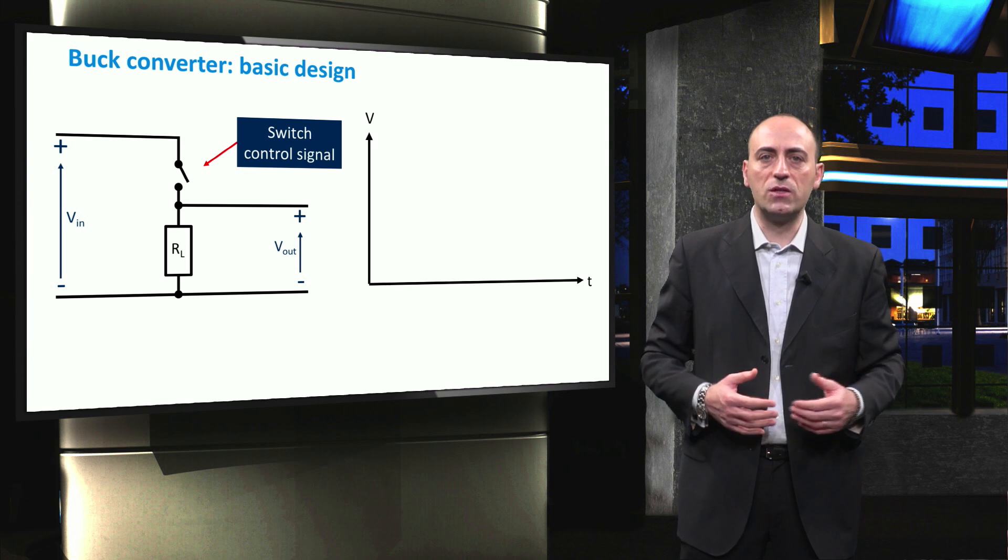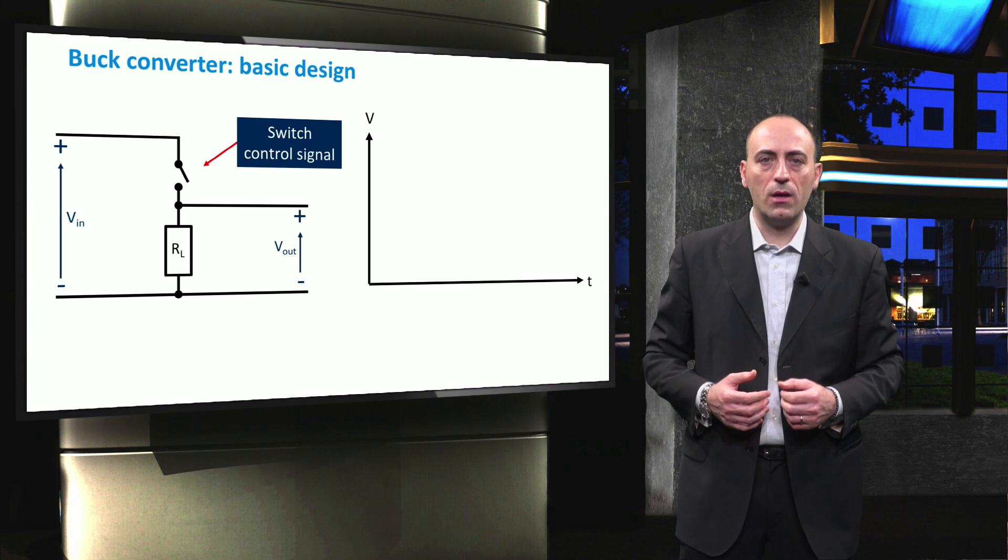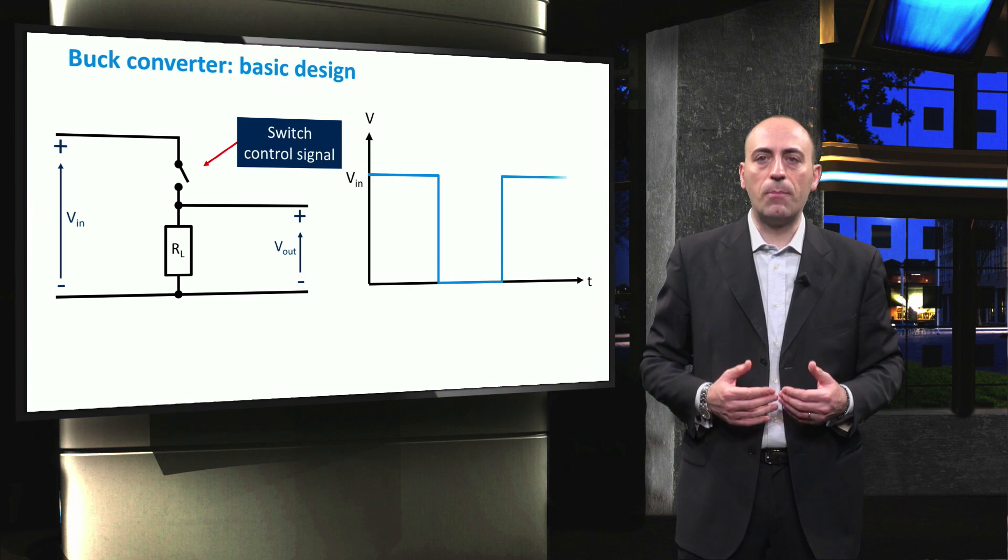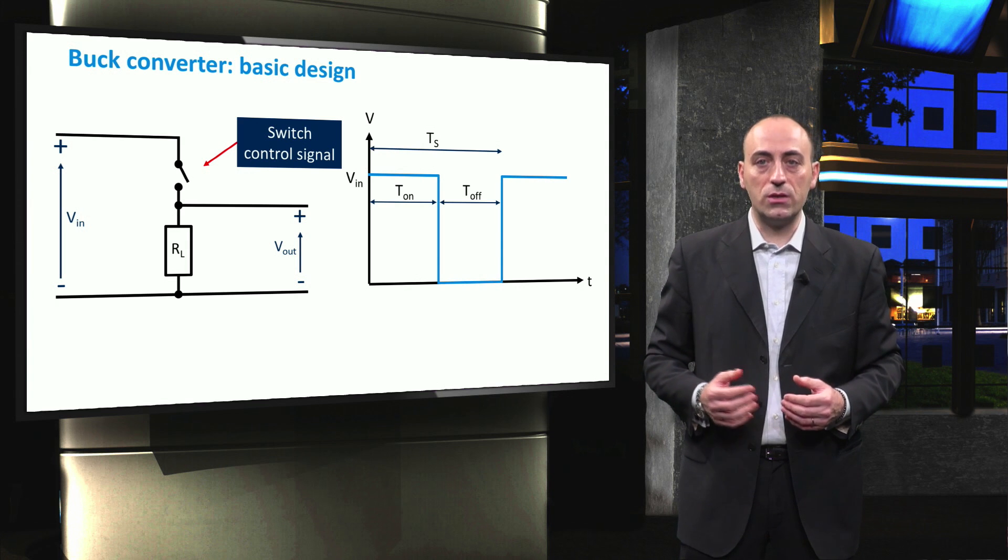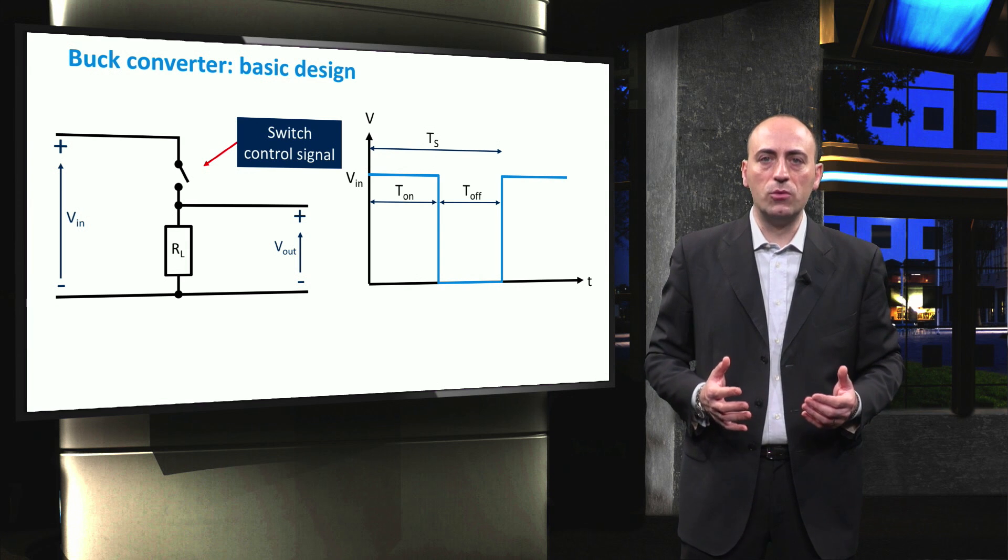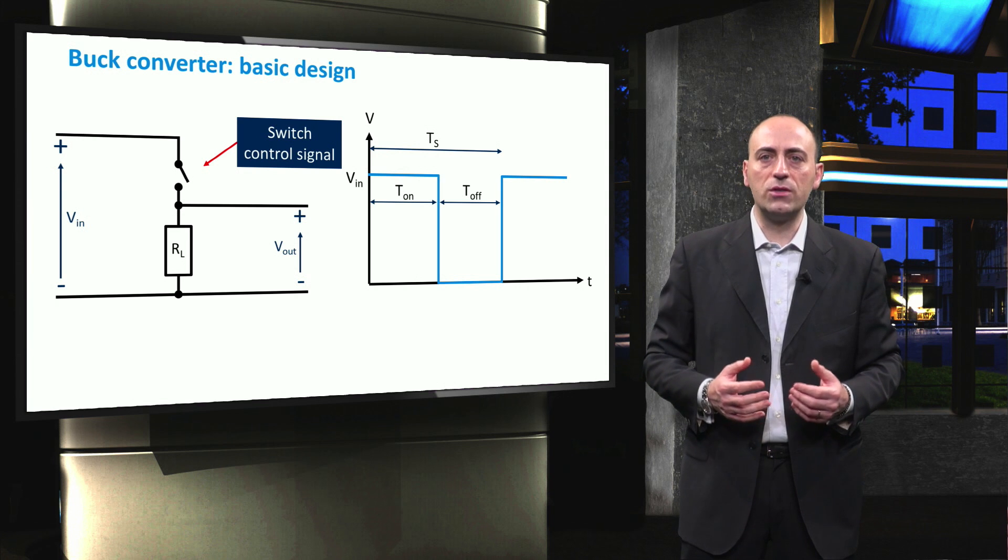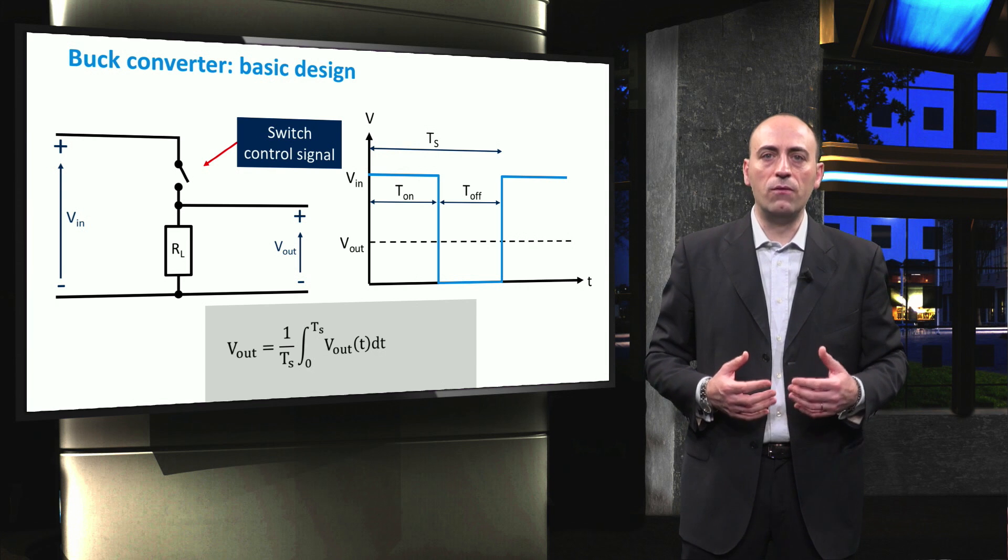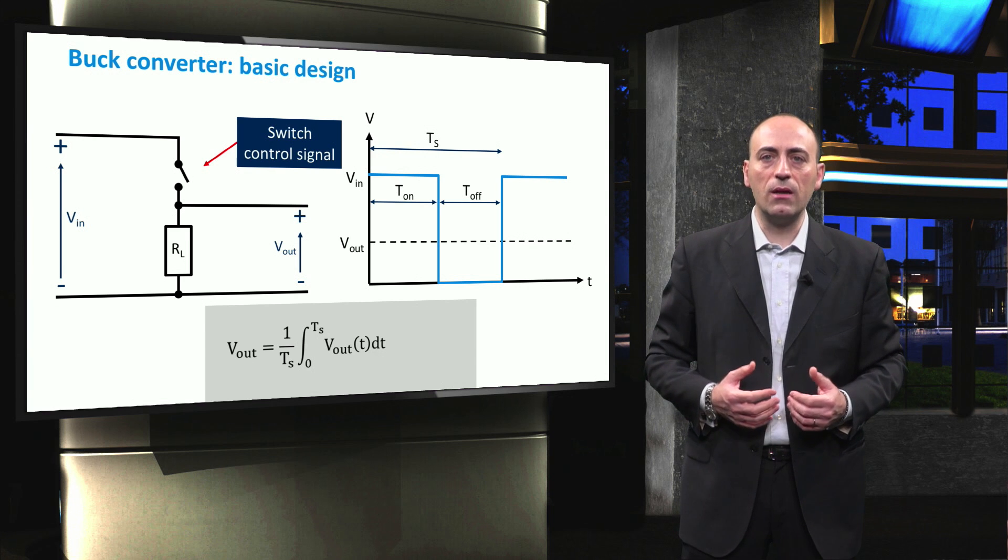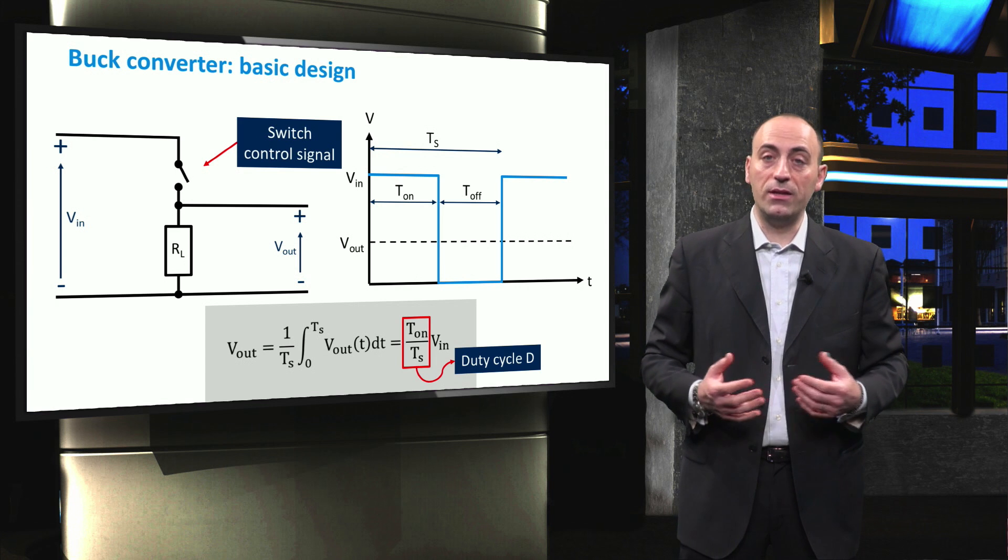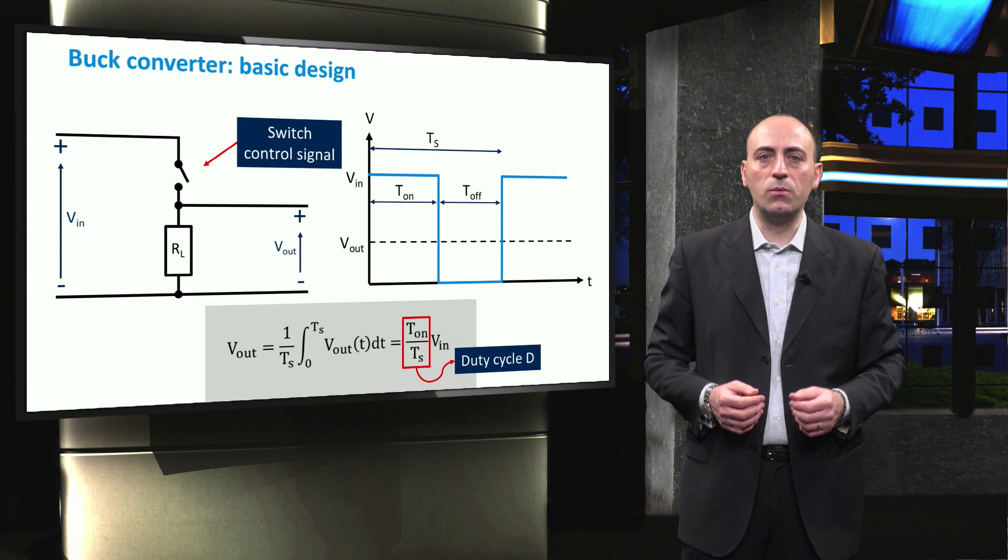In this diagram, the voltage applied at the resistive load is plotted as a function of time. Hence, when the switch is on, the input voltage Vin is applied directly to the load, while when the switch is off, the voltage across the load is zero. This is the unfiltered output voltage waveform Vout of such a converter. If we calculate the average output voltage by integrating in time the voltage over one period of the signal, then the resulting average DC output is a fraction of Vin, where TOn over Ts is, by definition, the duty cycle that we already introduced.